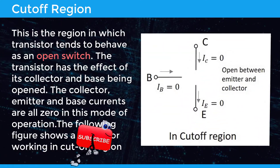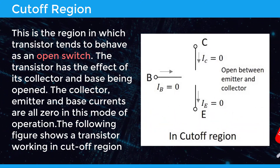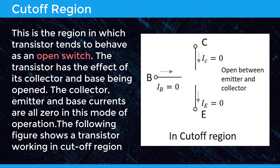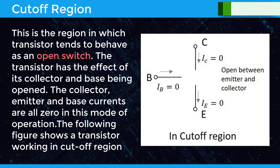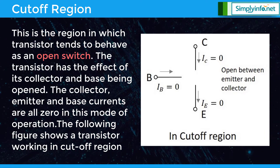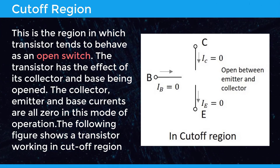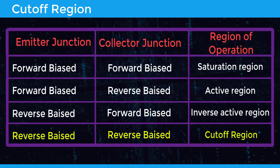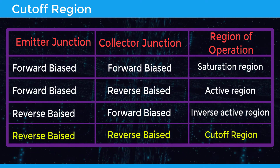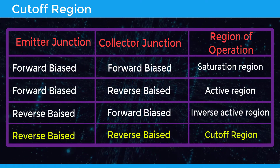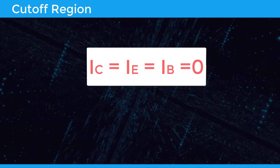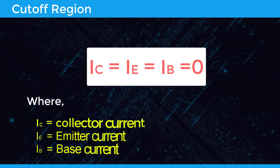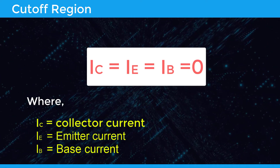In the cutoff region, transistors tend to behave as an open switch. The transistor has the effect of its collector and base being opened, and the collector, emitter, and base currents are all zero in this mode of operation. The following figure shows a transistor working in cutoff region. The transistor operates in cutoff region when both the emitter and collector junctions are reverse biased. In cutoff region: IC = IE = IB = 0, where IC is the collector current, IE is the emitter current, and IB is the base current.